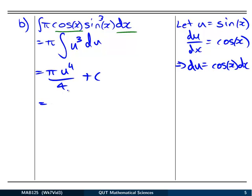And then changing back to the x form. So we have π times u to the 4, which is sin to the 4 of x, all over 4 plus c.